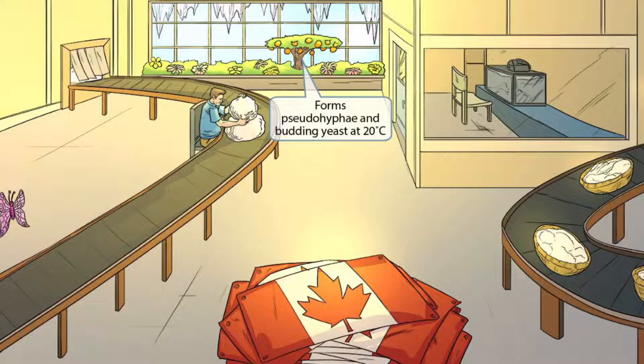If you turn your attention towards the back of the image, you can see a fruit tree next to cold icicles outside. The fruit tree with little spherical shaped fruit resembles the morphology of pseudohyphae and budding yeast. The icicles help you remember that this type of morphology occurs at cold temperatures. So together, these should help you remember that Candida forms pseudohyphae and budding yeast at 20 degrees, or cold temperatures. Let's define pseudohyphae.